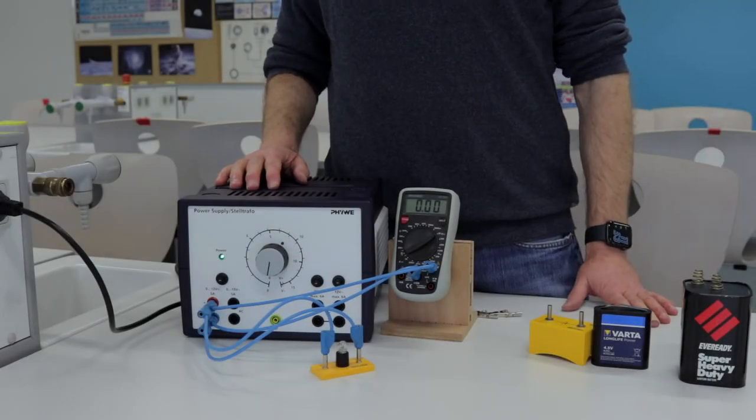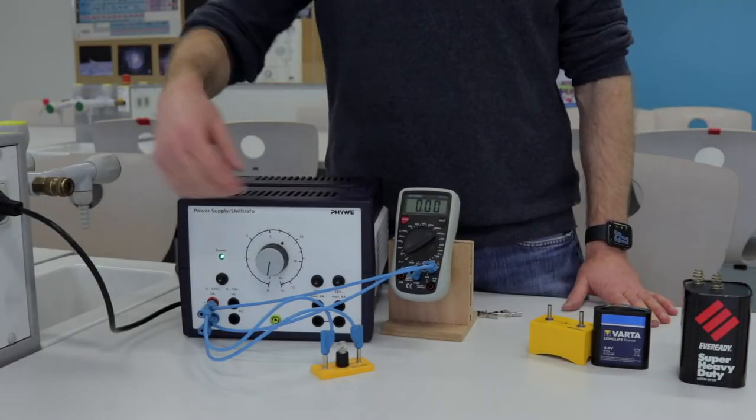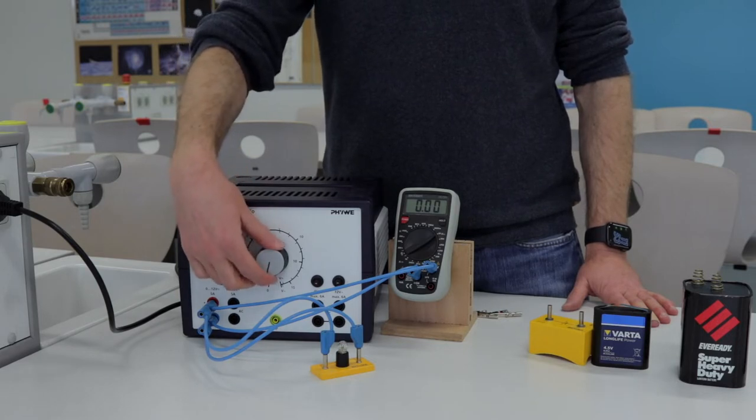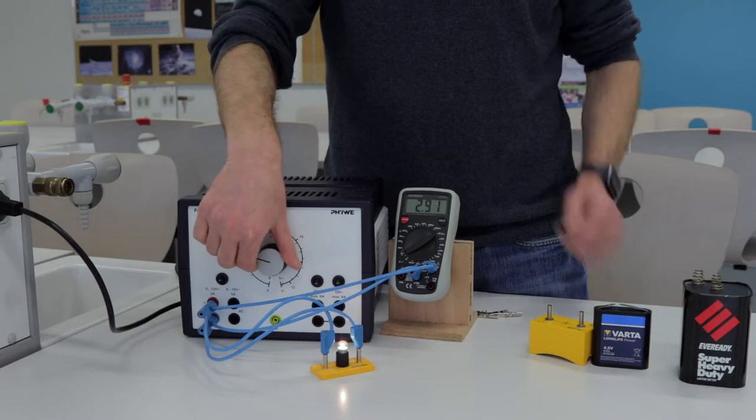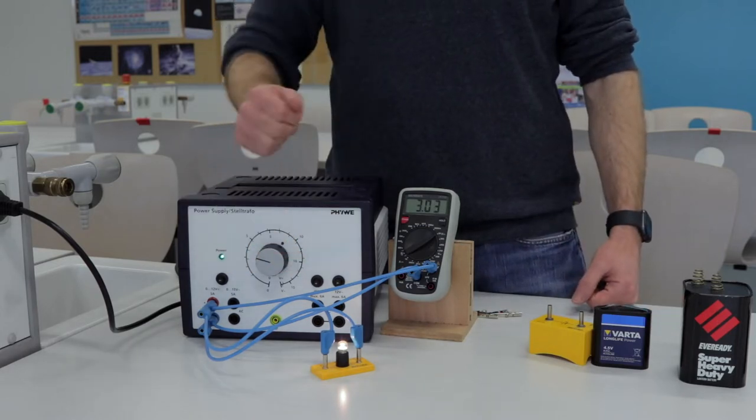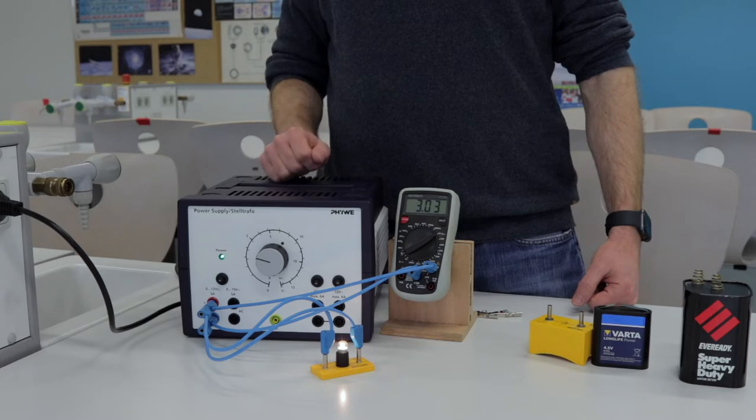Now the light bulb is connected across the variable power supply. So let's start increasing the voltage. As you can see, as the voltage increases, the brightness of the light bulb increases as well.